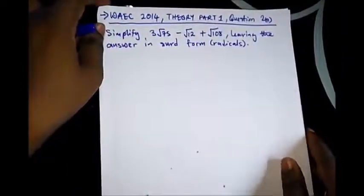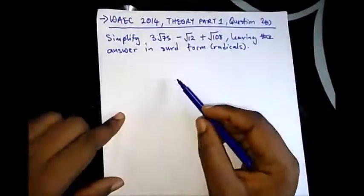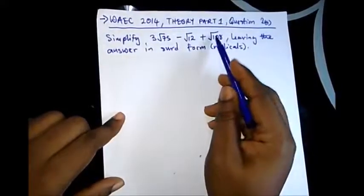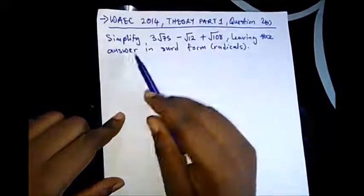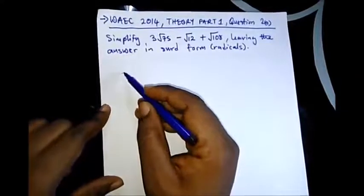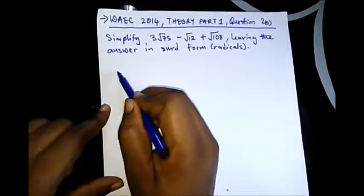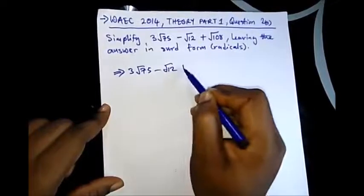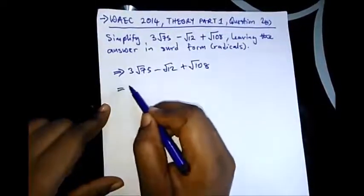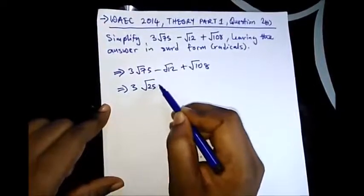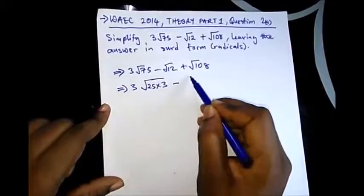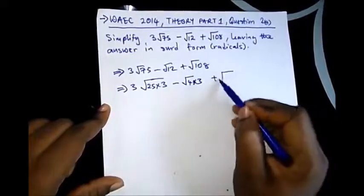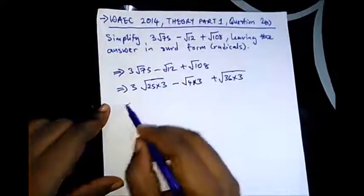The next question is from WAEK 2014, a theory question, part 1 of the theory section question 2a. It says simplify 3√75 - √12 + √108. We can further break this down as √(25×3) - √(4×3) + √(36×3).